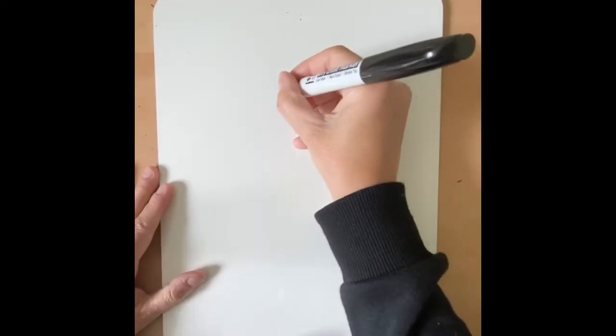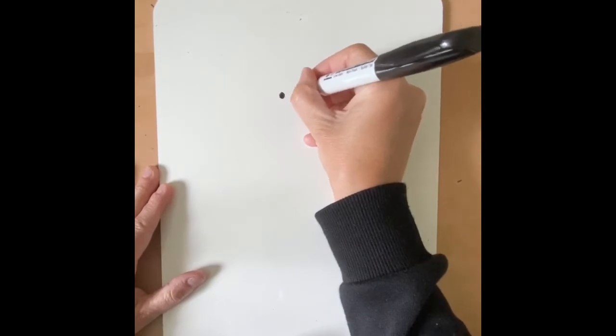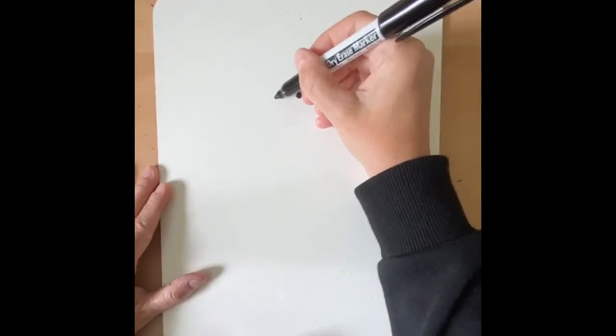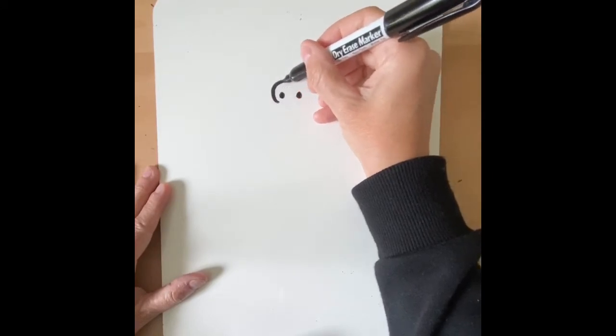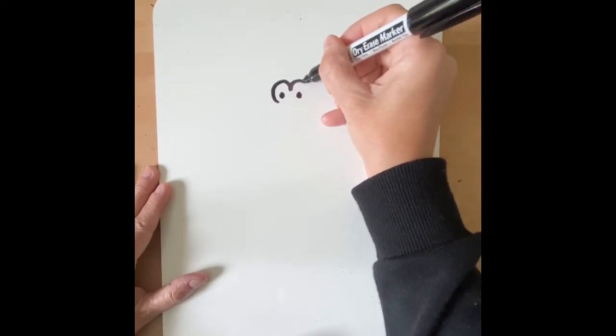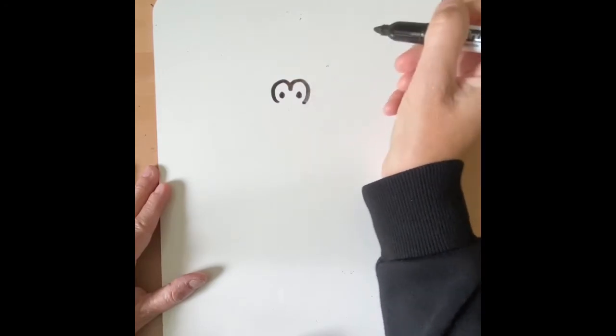So we're going to start our monkey. First, we're going to do two eyes, and then over the eyes we're going to make an M, but we're going to start there, go up, down, and then go back there.